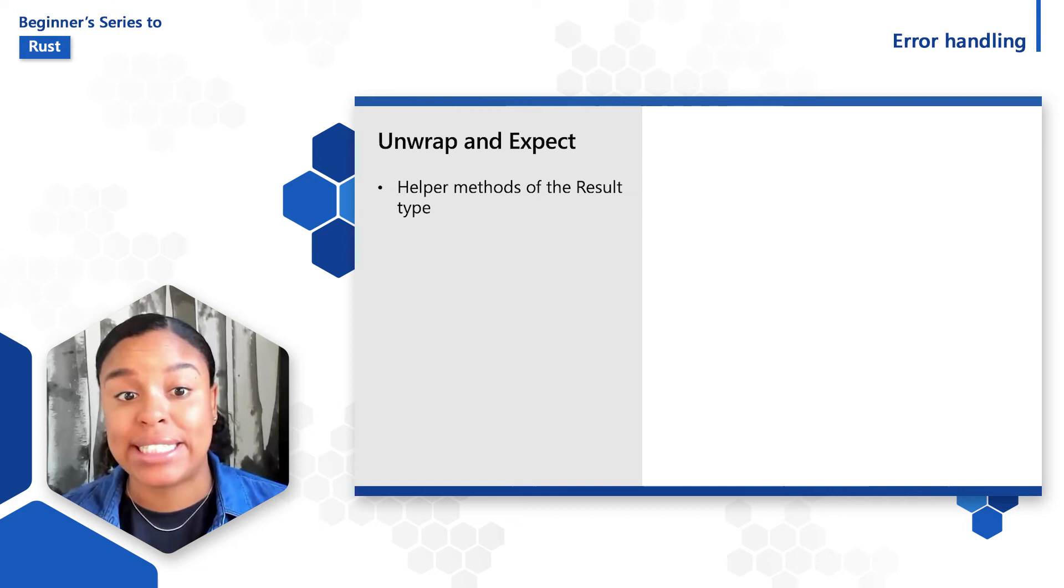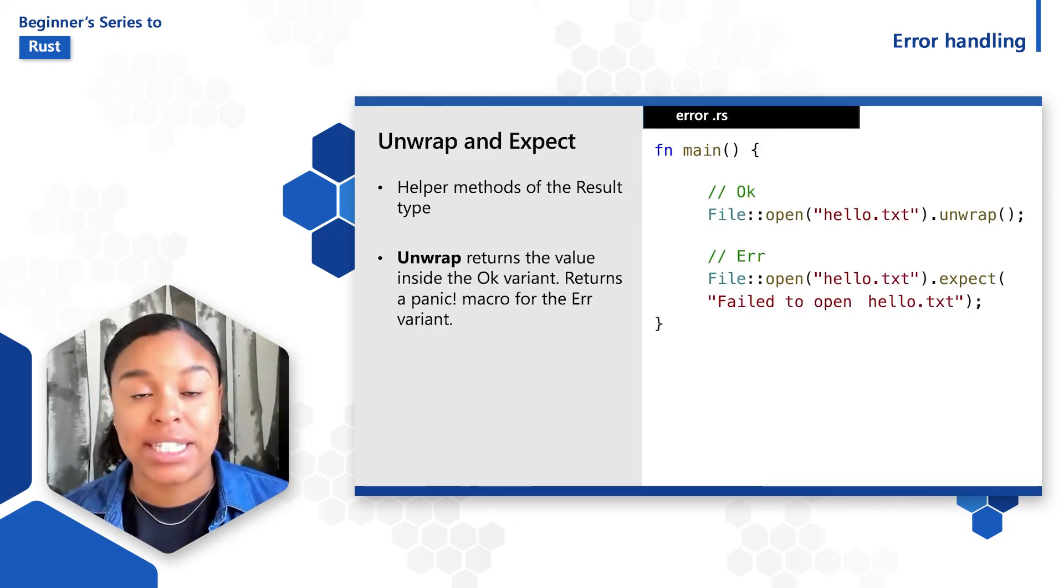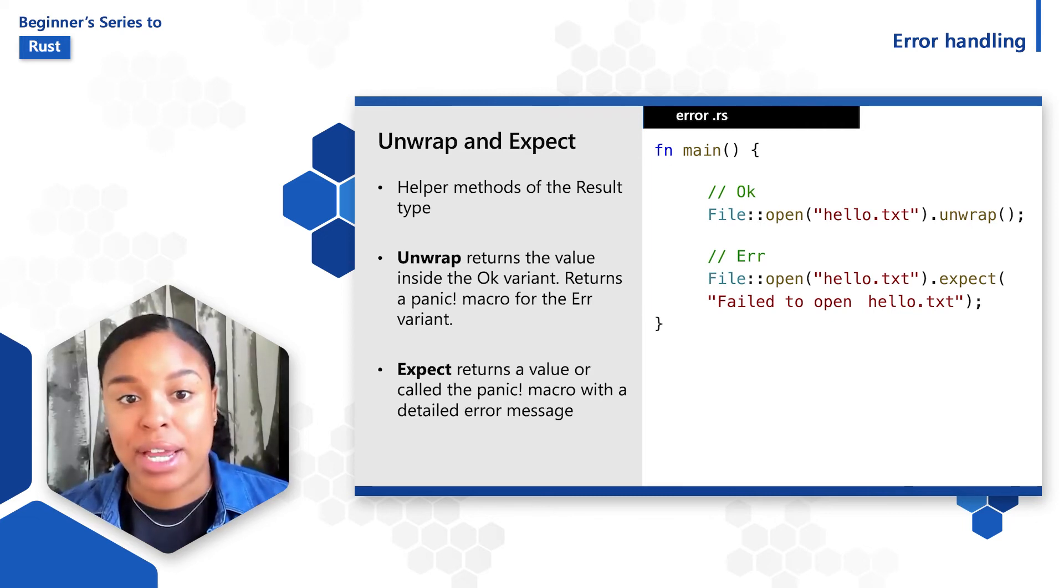The result type also has the unwrap and expect helper methods. If the result value is the okay variant, the unwrap method will return the value inside okay. If the result is the error variant, unwrap will call the panic macro for us. The expect method is used in a similar way as unwrap where it either returns a value or calls the panic macro. When it calls the panic macro, it allows us to also write a detailed error message.